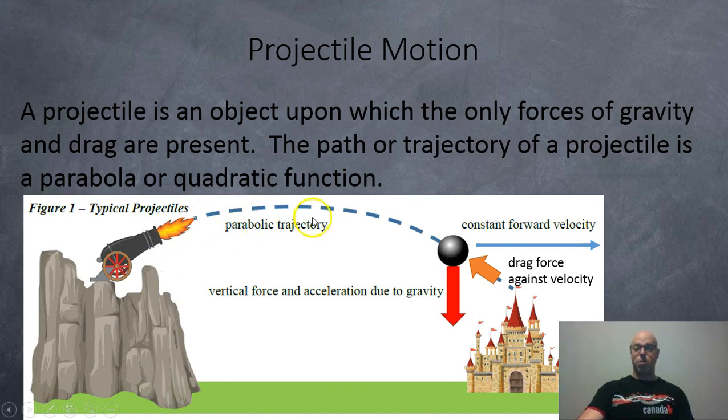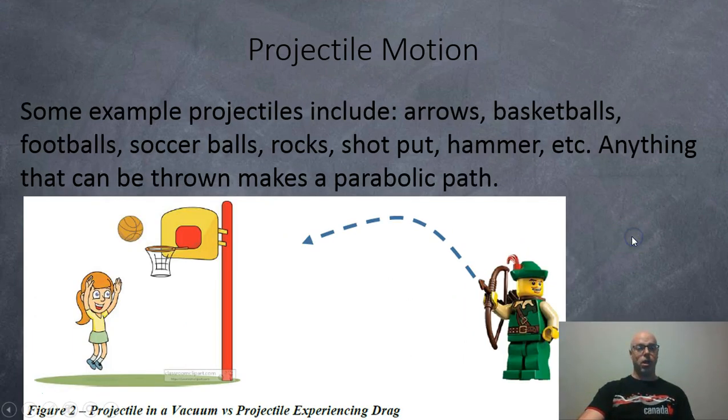Here we got our parabolic pathway, and the only forces acting on it are drag and gravity. If we ignore drag, if there is no drag, then we will have a constant velocity forward. Some examples of projectiles are arrows, basketballs, footballs, soccer balls, rocks, shot put, hammer, etc. Anything that can be thrown or launched that makes a nice parabolic path and cannot have thrust. So a plane or a missile or something that has a thruster or a propeller, that is not a projectile.